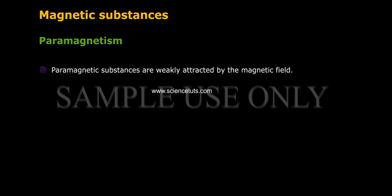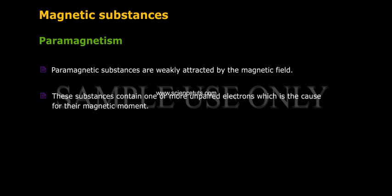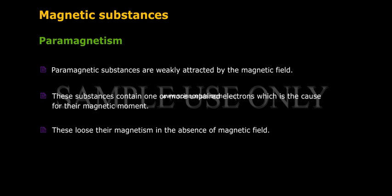Paramagnetism: Paramagnetic substances are weakly attracted by the magnetic field. These substances contain one or more unpaired electrons, which is the cause for their magnetic moment. These lose their magnetism in the absence of magnetic field.